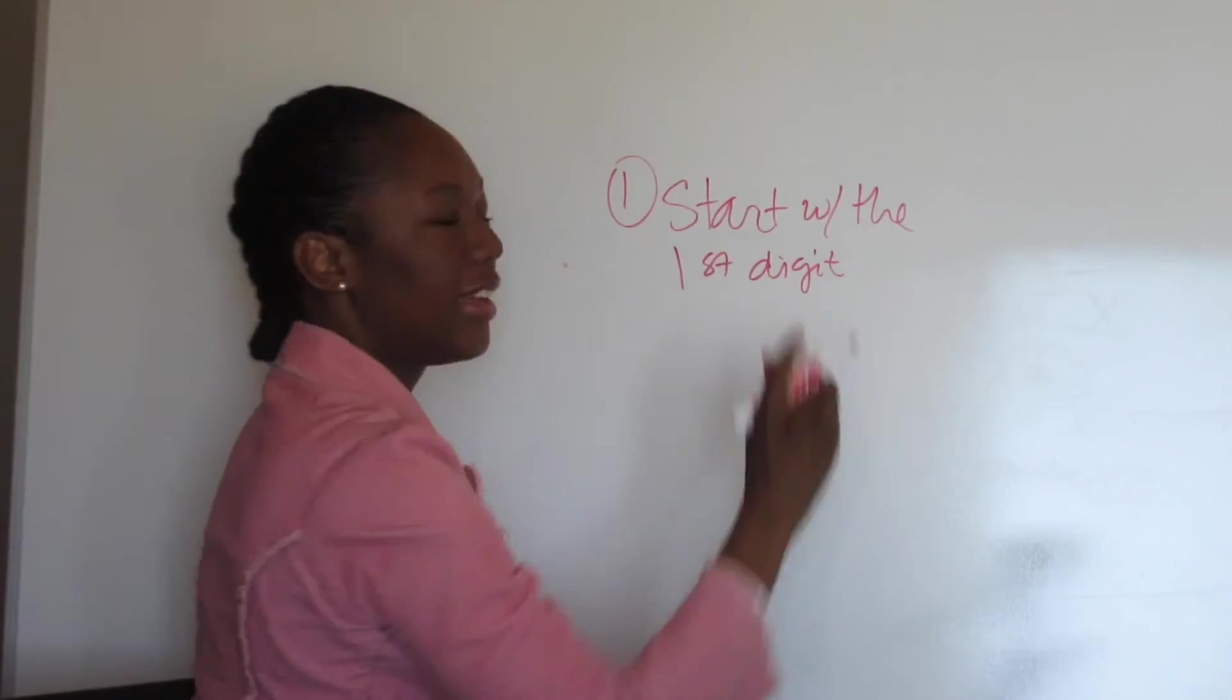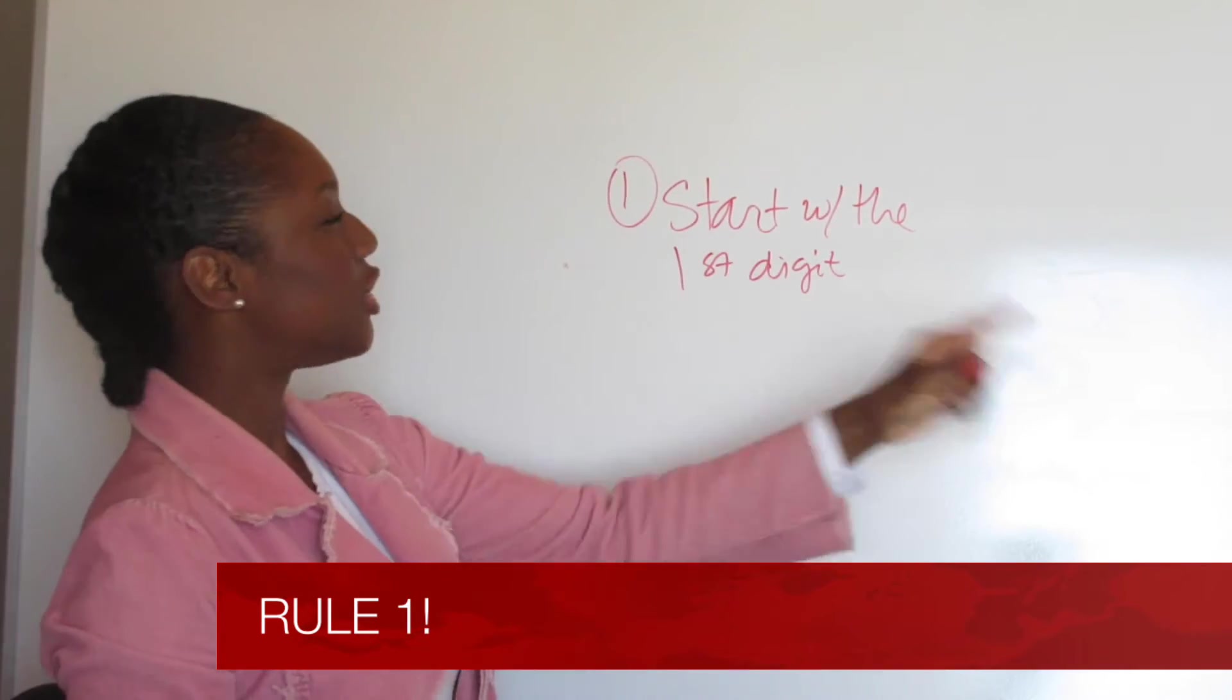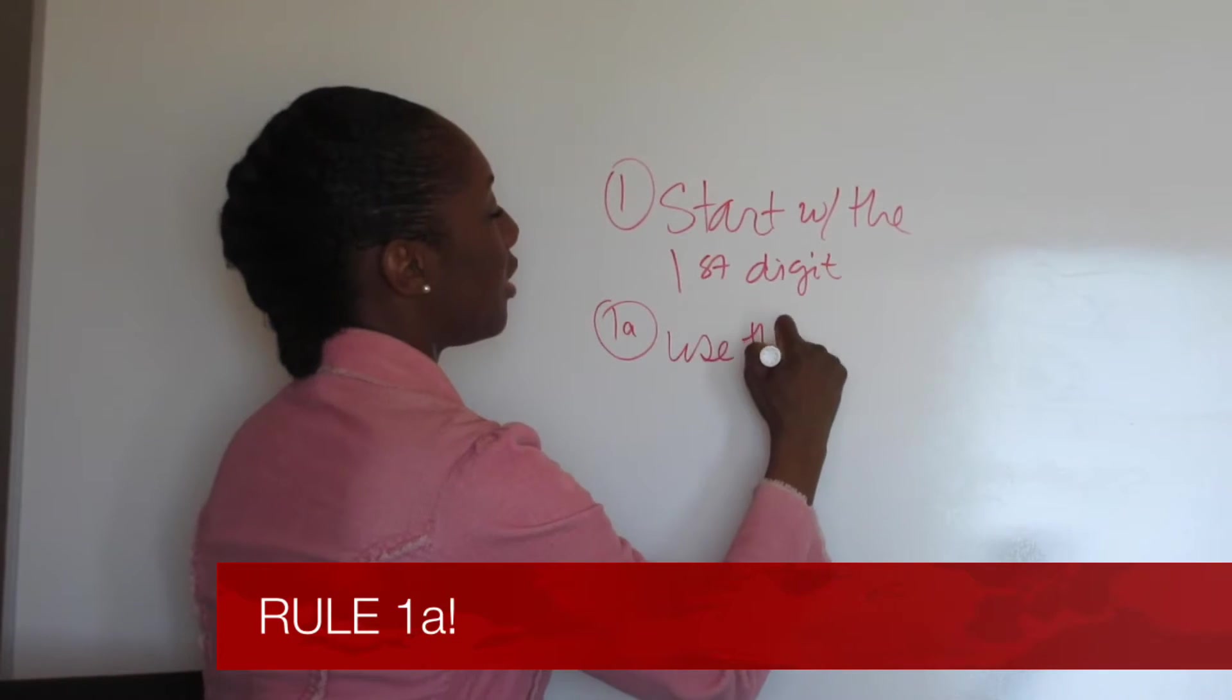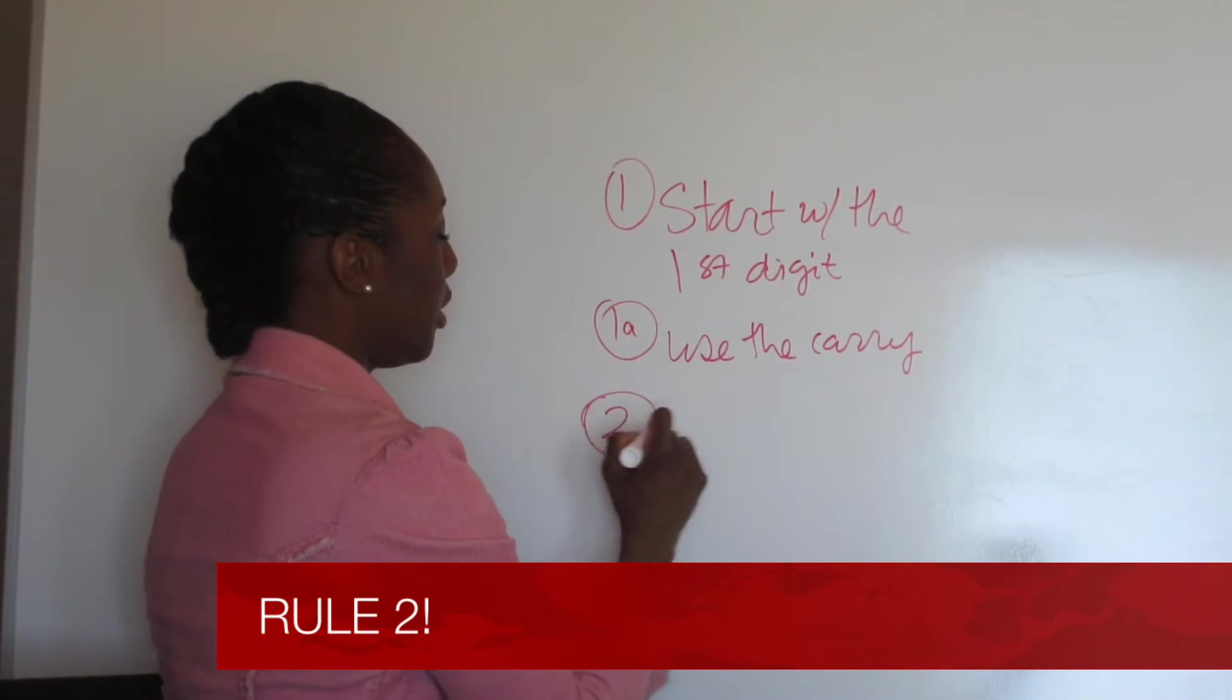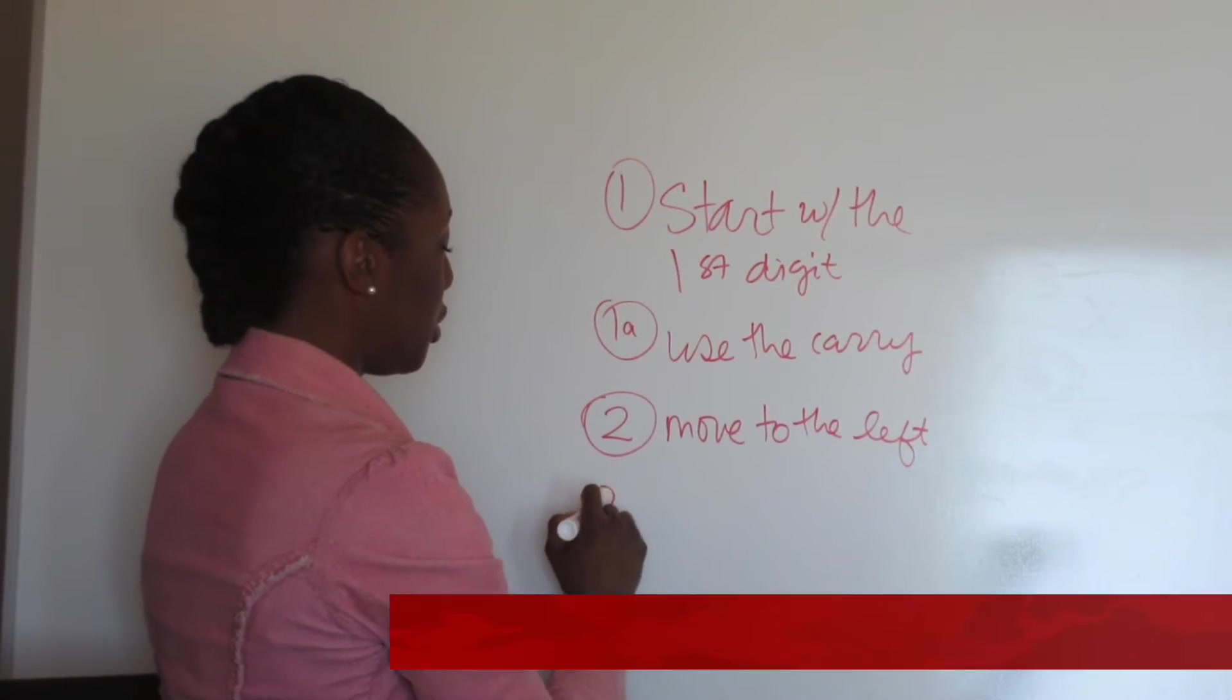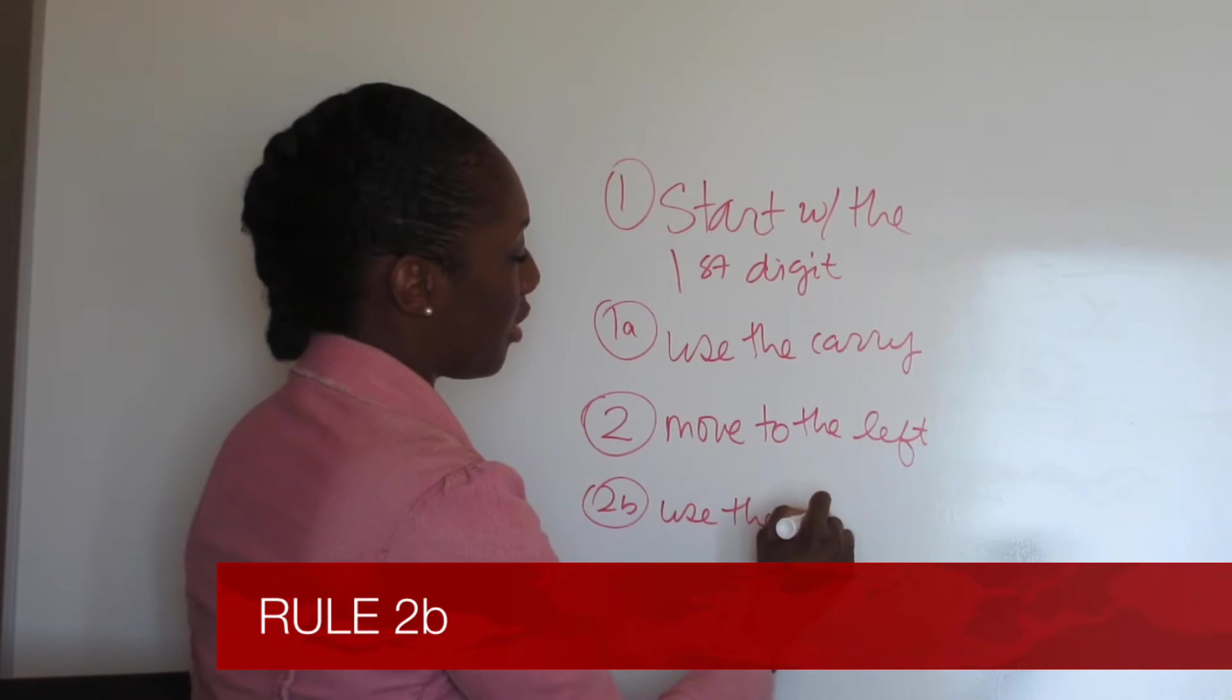Rule 1: doesn't matter how big the number is, how long the number is. Start with the first digit. Don't ask why, just do it. 1A: use the carry. Rule number 2: move to the left. Rule 2B: use the carry.